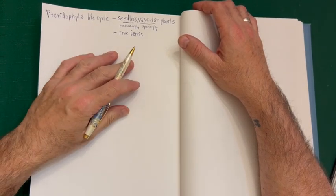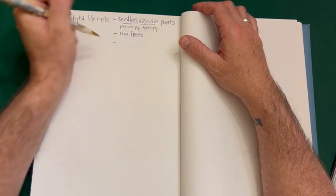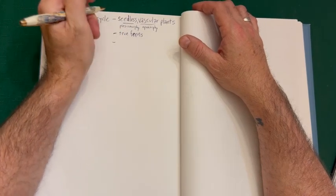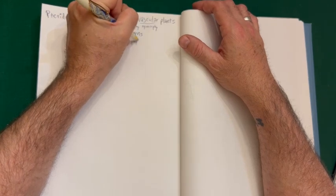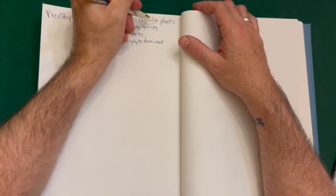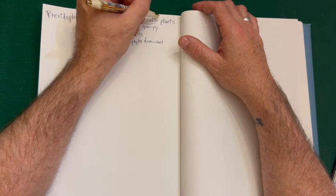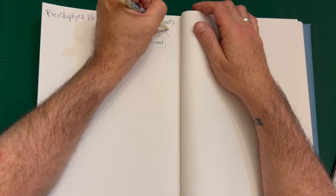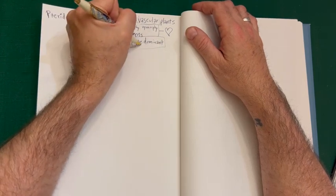Something we see in the vascular plants is we go from being gametophyte dominant to being sporophyte dominant. These two things — vascular plus sporophyte dominant — always go together, and that also means they are diploid dominant.